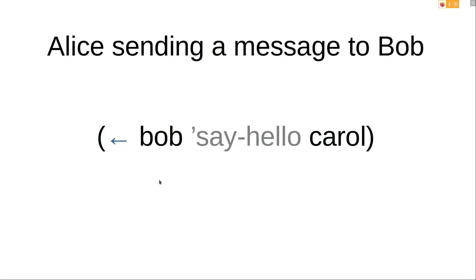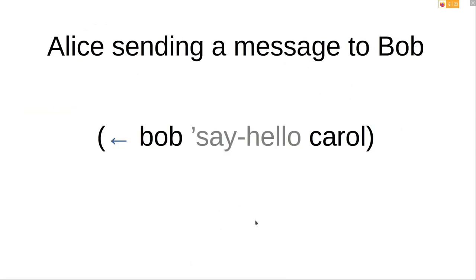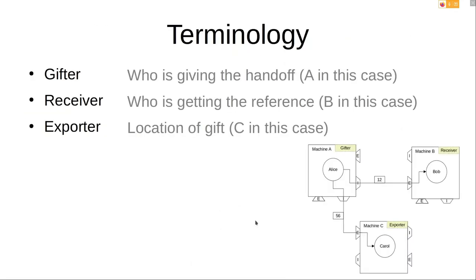We want to do a handoff. Bob here is just a method name in Goblins, and the arrow represents the send-message operation. Alice is sending to Bob the method 'say hello' with the reference Carol — which Bob does not have. So a handoff will occur.